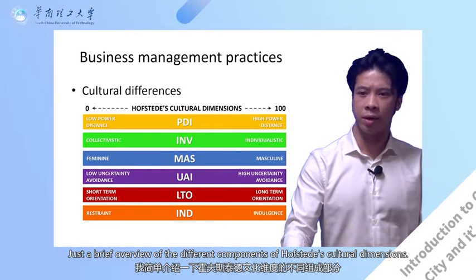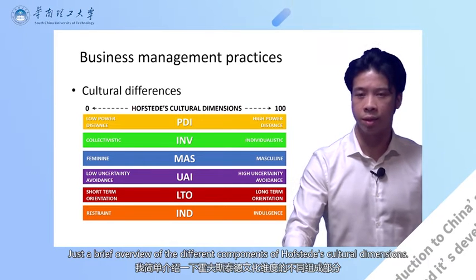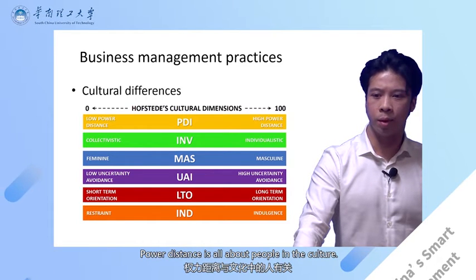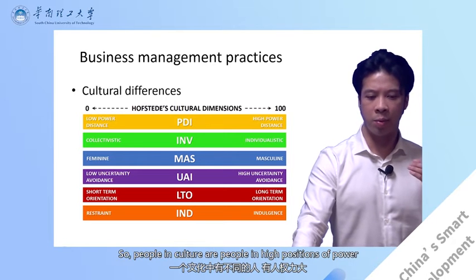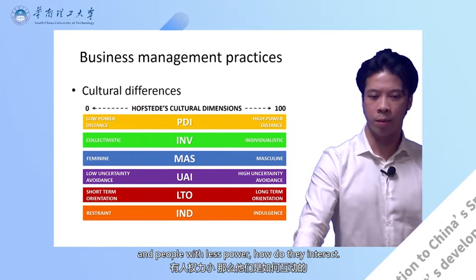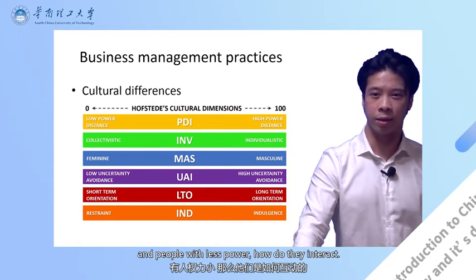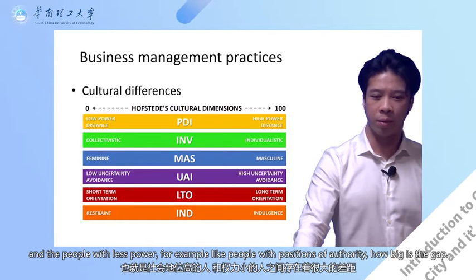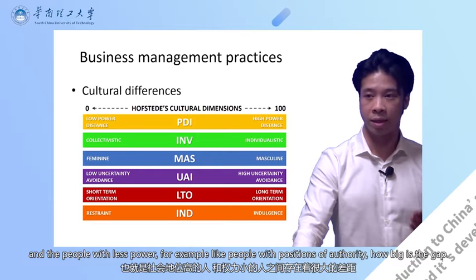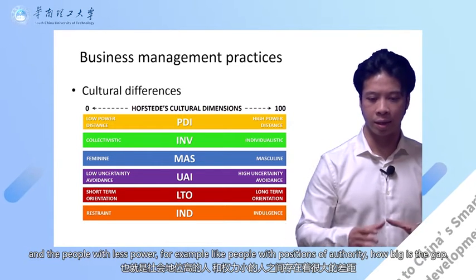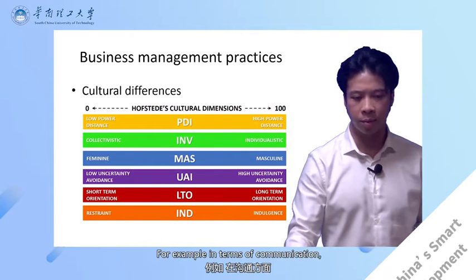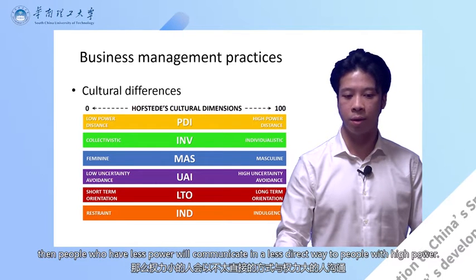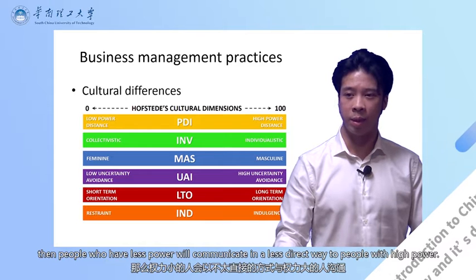A brief overview of Hofstede's cultural dimensions: the first one is power distance. Power distance is about how people in high positions of power and people with less power interact. If there is a high power distance, the gap between those with authority and those with less power is large. For example, in terms of communication, if there is high power distance, people with less power will communicate in a less direct way to people with high power.